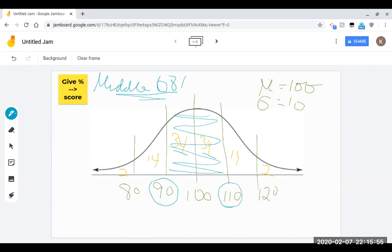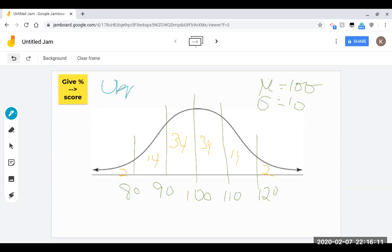All right, we did that one. What score is associated with the, oh, let's do this one. Upper 84%. It's a hard one. Upper 84. So when it says upper, that means you start up here and you move down the percentage that's necessary.